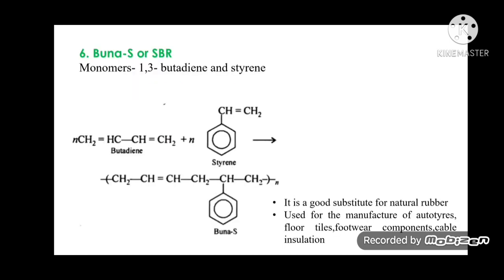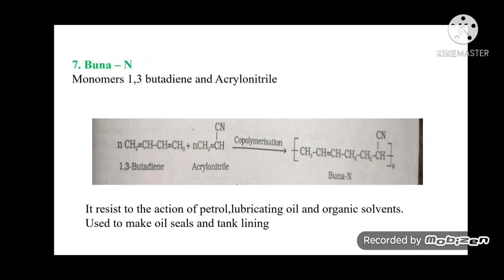Buna-S (SBR): monomers are 1,3-butadiene and styrene. It is used as a good substitute for natural rubber and in manufacturing auto tires, floor tiles, footwear components, and cable insulation. Buna-N: monomers are 1,3-butadiene and acrylonitrile. It is resistant to petrol, lubricating oil, and organic solvents, and is used to make oil seals and tank linings.